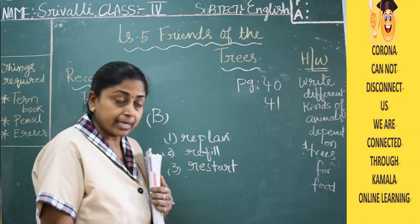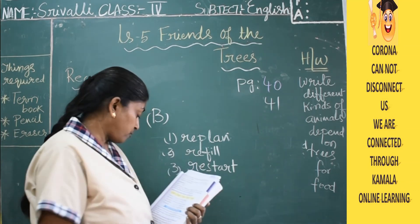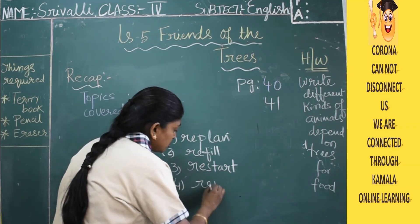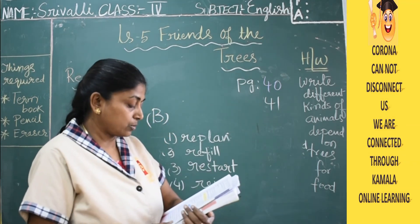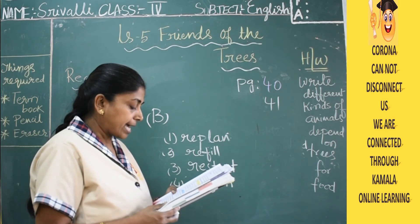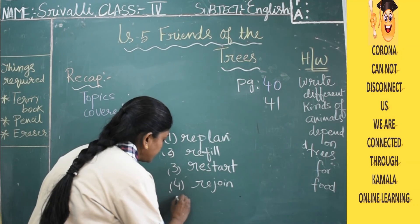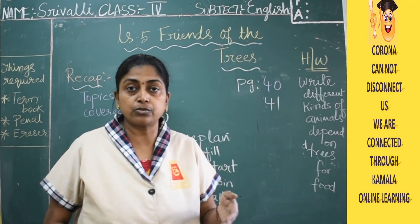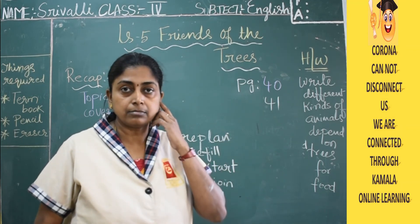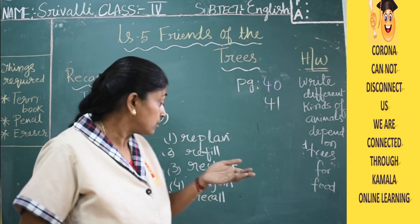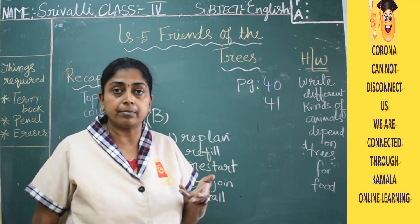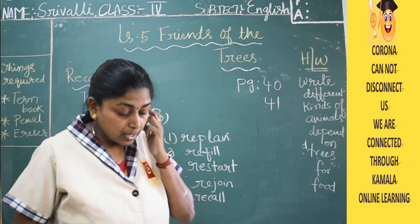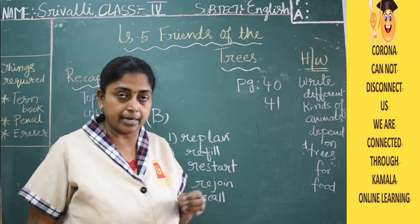Second one: someone went to blank his bottle — refill. A bottle had water, he drank it, now it is empty, so he went to refill it — fill that bottle again. Fourth one: Sanya decided to rejoin the dramatic club. Fifth one: they could not blank his name however hard they tried — recall. Sometimes I forget a student's name and I try to recall it by seeing that student, but sometimes I still cannot get it. That is called recalling — trying to bring back the name from memory.